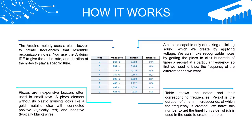Period is the duration of time, in microseconds, at which the frequency is created. We halve this number to get the time high value, which is used in the code to create the note.